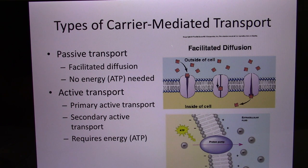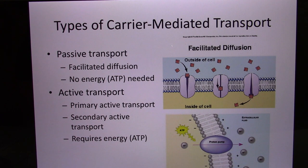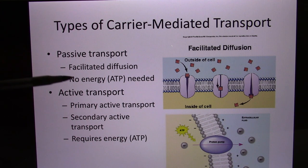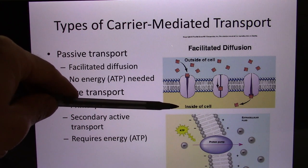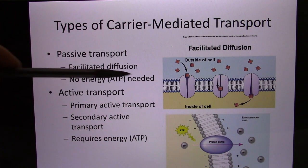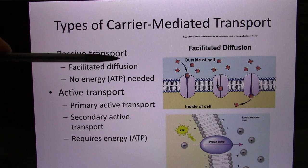Those carrier proteins can be divided into passive and active transport. Passive transport doesn't require ATP — ATP is the biological energy. The driving force is the concentration gradient, so the molecule still goes from high concentration to the low concentration area. They just need a helper, so we call it facilitated diffusion.